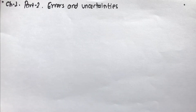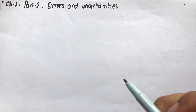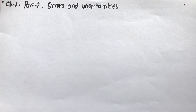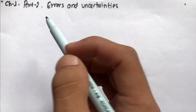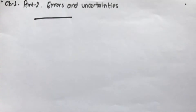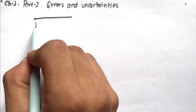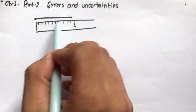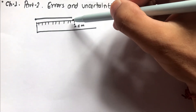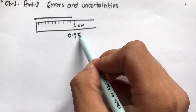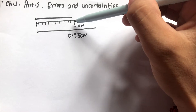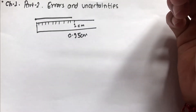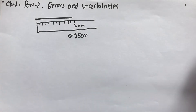Welcome back. Today we're going to talk about errors and uncertainties. Whenever we measure something, we cannot ever get exactly the precise value — there is always an error. For example, you want to measure the length of this line, so you place your measuring scale here. You can see it's somewhere in between. You might be tempted to say 0.95 cm, but it could be 0.94 or 0.96 — you cannot be sure.